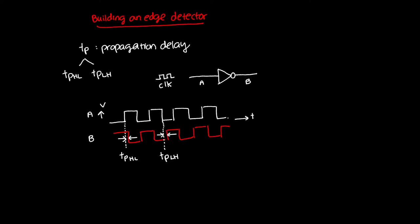Now let's talk about edges. Looking at the clock input signal, when the signal goes up that is a rising edge, sometimes known as a positive going edge or positive going transition (PGT). And when the signal goes from high to low, that is a falling edge, also known as a negative going transition.